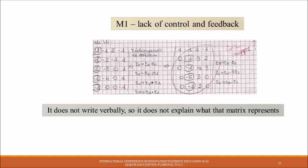Mistake M1: Lack of control and feedback. They do not write verbally at all, they use a personal shorthand. He or she does not write verbally, so does not explain what the matrix represents.